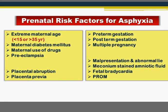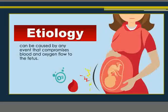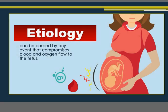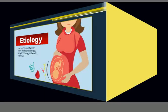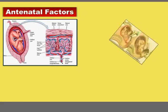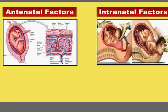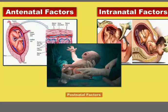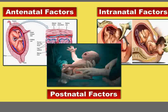The etiologies or causes of birth asphyxia: in summary, anything that compromises blood and oxygen flow to the fetus will lead to birth asphyxia. Since it is hypoxic ischemic, this means decreased oxygen supply or decreased blood supply. We can classify causes into three groups: antenatal factors, intranatal factors, and postnatal factors.